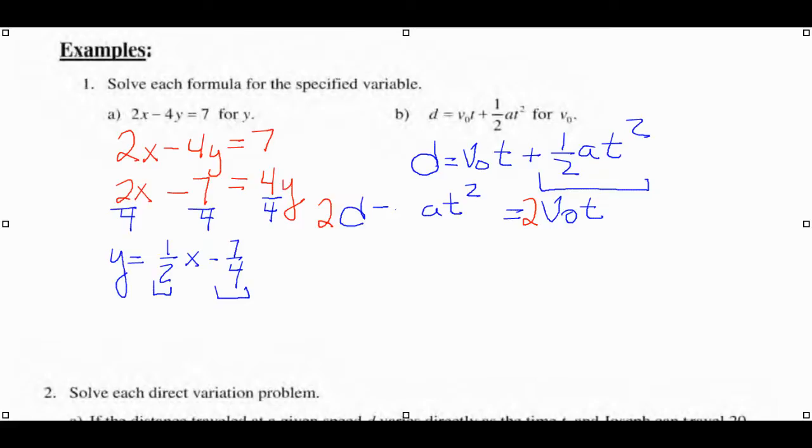This is what we have. Now to get the V sub O by itself, we're going to divide out the 2 and the T from this side. We're going to divide both sides by 2T. Now the 2s cancel out, the Ts cancel out, and we get V O equals this. And that looks good.